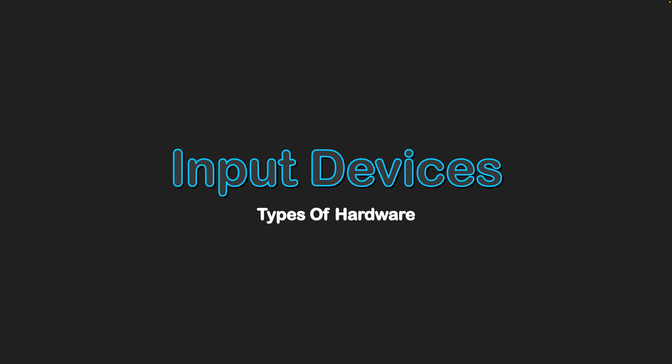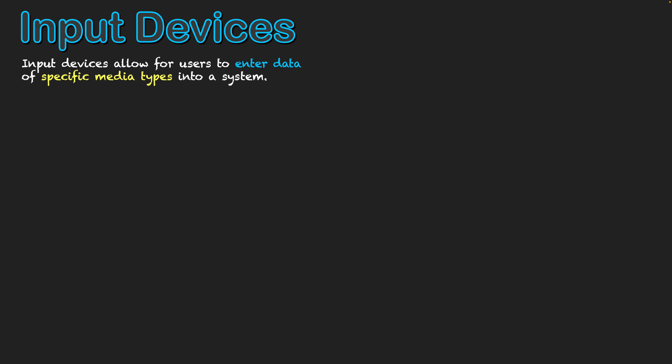Types of hardware: input devices. Input devices allow users to enter data of specific media types into a system. In this video, I'll be highlighting how each different type of device assists with entering a different type of media — those media types being text, image, audio, video, etc.